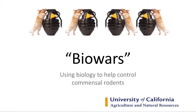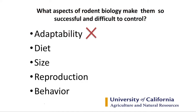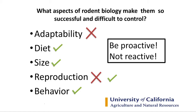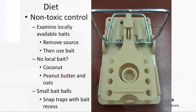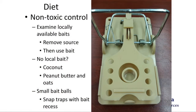We can use their biology to fight back. Adaptability — no. Diet — yes. Size — yes. Reproduction — a little bit. Behavior — yes. Be proactive, not reactive. Don't wait until you have five rats in your yard. If you see a rat during the day, there is already a serious problem — it means there's so much competition at night that rats are forced to be active during the day.